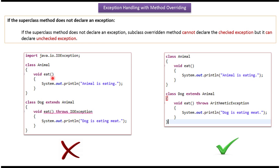If the superclass method does not declare an exception, then the subclass overridden method cannot declare a checked exception. So in this case, the subclass overridden method eat throws IOException. IOException is a checked exception, so the compiler will throw a compile-time problem.